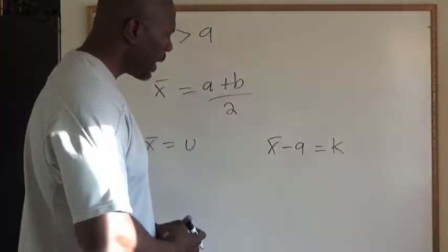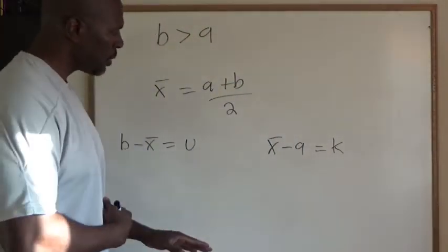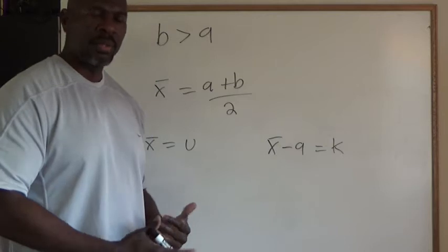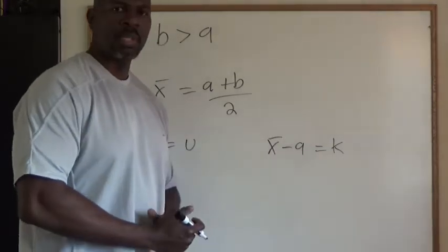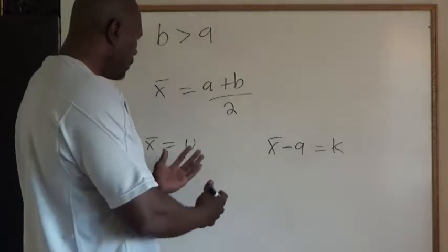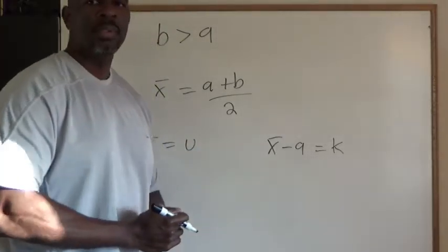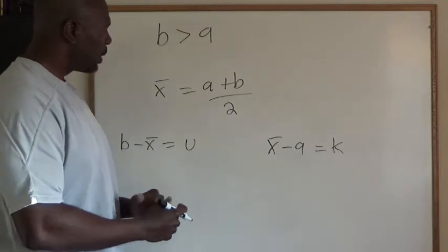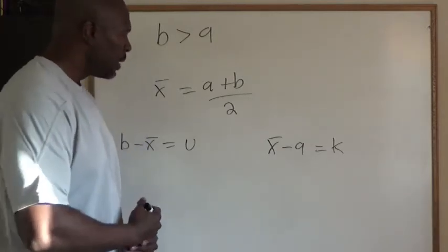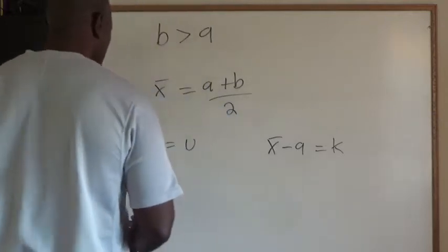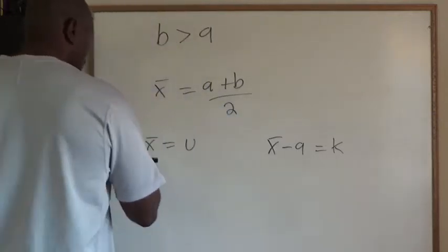So where A is the smaller of the two numbers, which means it will be smaller than the mean. And so X bar minus A is some number K. If the values of U and K are equal, then we have proved that two numbers are equal distance from their average.